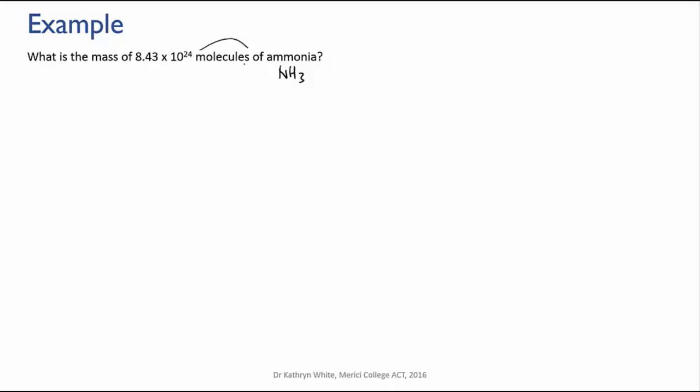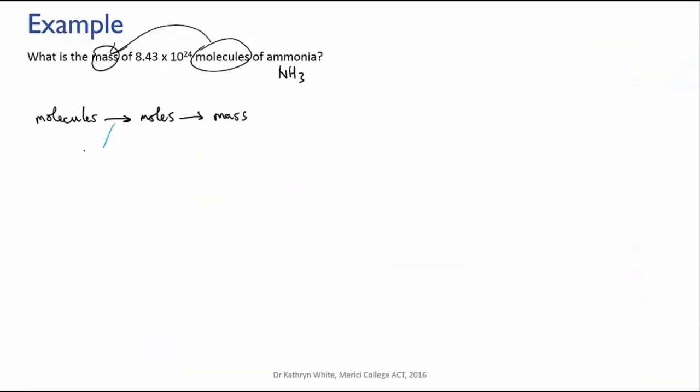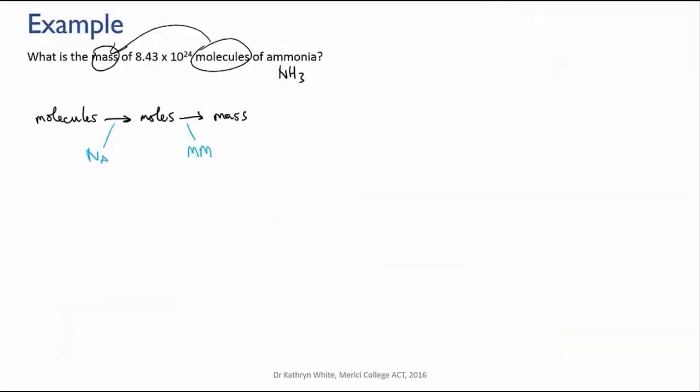We're going from number of molecules to mass. So the way we're going to set this out is we will first do a conversion of molecules to moles and then we'll convert moles to mass. What conversion factors do we need for each of these conversions? Well, from molecules to moles, we need Avogadro's number. And from moles to mass, we need the molar mass of the substance, which in this case is ammonia.